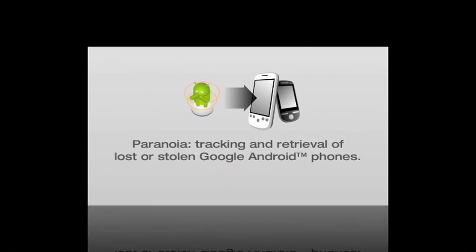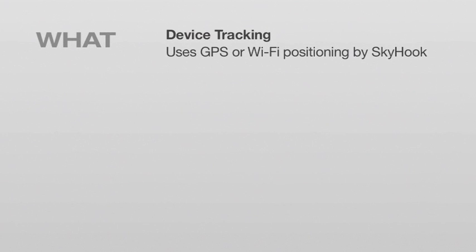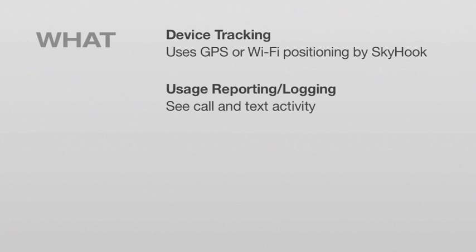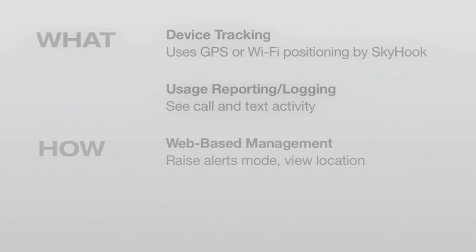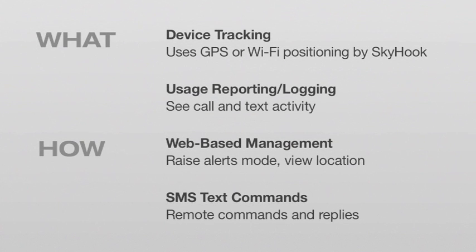Paranoia is an application that aims to assist in the tracking and retrieval of lost or stolen Android phones. We can locate the phone using GPS or Wi-Fi positioning by Skyhook. We also provide usage logging, so you can monitor calls and texts made on your device. These features can be managed either through a web service you can view through your browser, or through SMS-based commands if you do not wish to create an account. Your device will also reply via text.